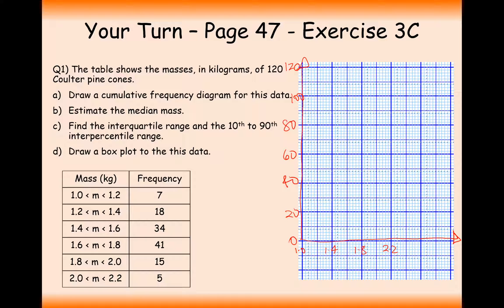So the first thing I'm going to need to do is add up my cumulative frequencies, or add up my frequencies as I go along. So it's going to be 7, 25, 59, 100, 115, 120, which is spot on what I need out of my pine cones. So the first thing I'm going to do is I know that I've got no pine cones less than 1 kg, so I'll put a little marker at 1 kg, 0.